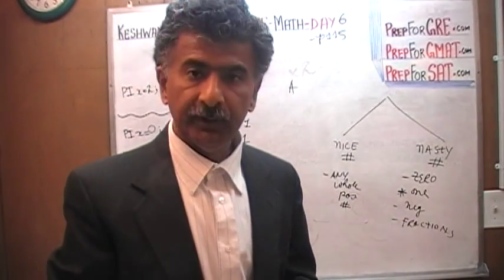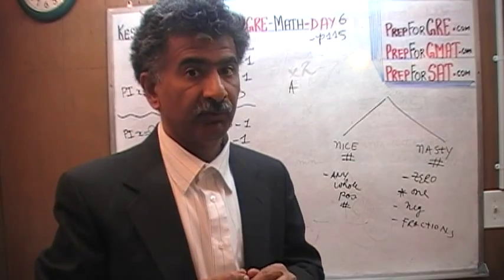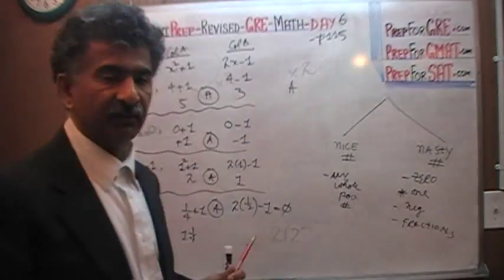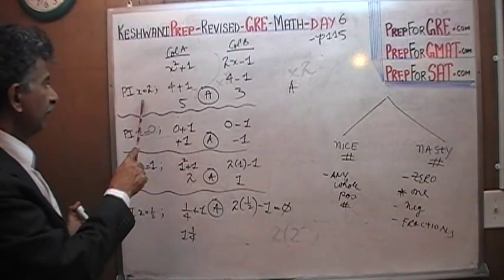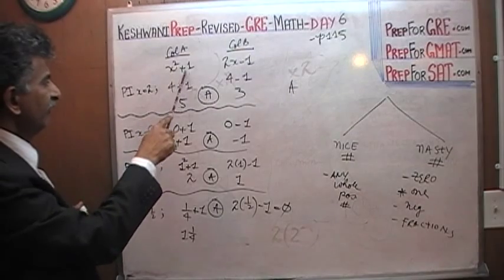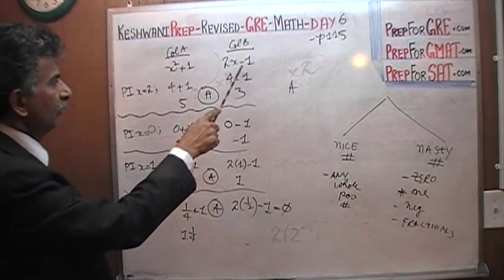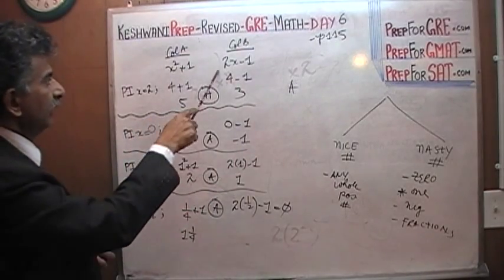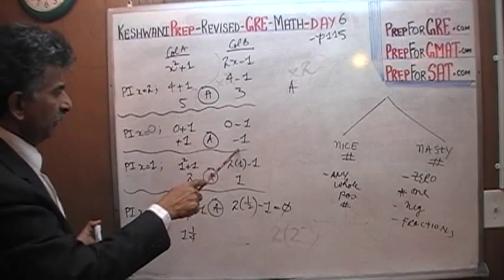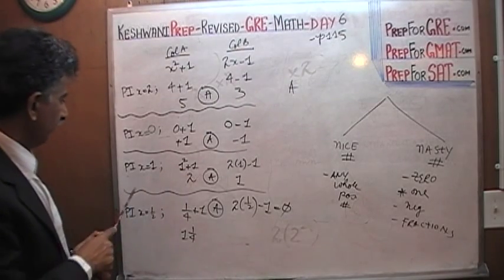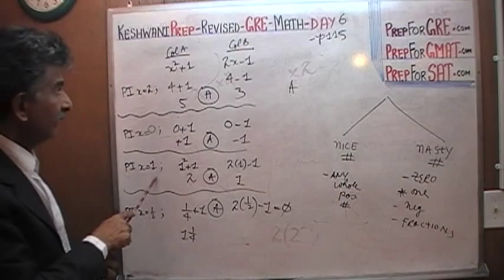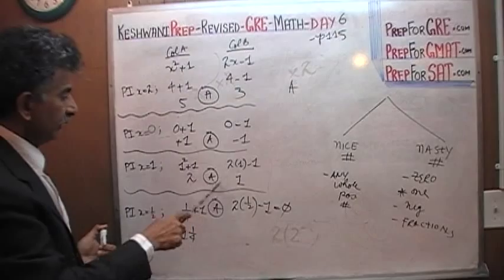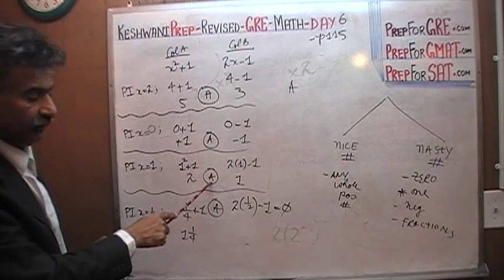It seemed like it took a long time, but because I was explaining everything, let me redo it quickly to show it only takes seconds. Plug in 2: two squared is 4, plus 1 is 5. Two times 2 is 4, minus 1 is 3. Five is more than three. Plug in zero: zero plus one is one; zero minus one is negative one — positive one is greater, answer is A. Plug in x equal to one: one squared plus one is two; two times one minus one is one — this is greater. It only takes a few seconds.